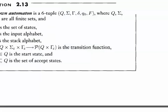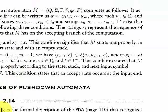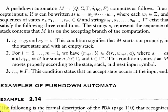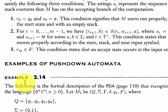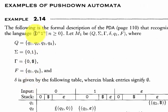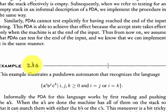For example, consider a language that recognizes zero to the power n and one to the power n, where n is greater than or equal to zero. That means the number of zeros and ones must be the same — if there are three zeros, there must also be three ones.